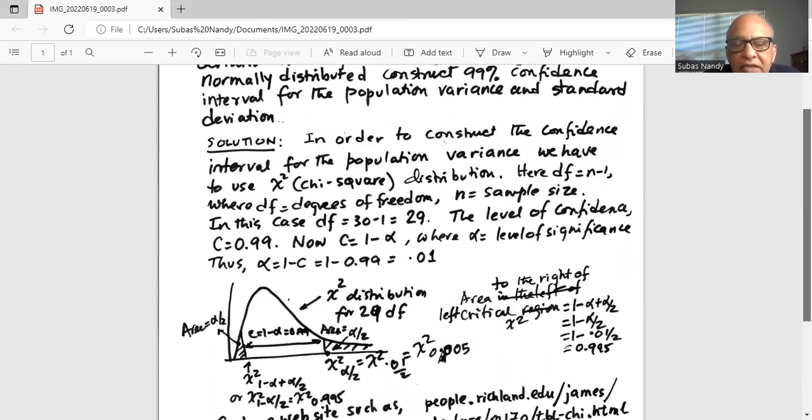I've shown you the chi-square distribution with the area in the center where most probably the population variance will fall is 0.99, equal to c equal to 0.99, and we found alpha equal to 0.01.